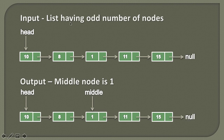If we suppose the linked list has an odd number of nodes — that is 10, 8, 1, 11, 15 — this linked list has five nodes. And if you want to find the middle node, then it's the third element, which is the node having data equal to one.